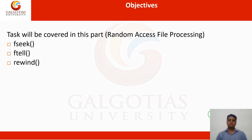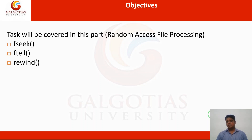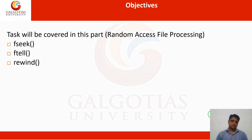In random access file processing, suppose you have a memory and data is stored at different locations — like 1, then 10, then 3, then 6, then 5 — meaning anywhere. But these addresses are connected to each other.